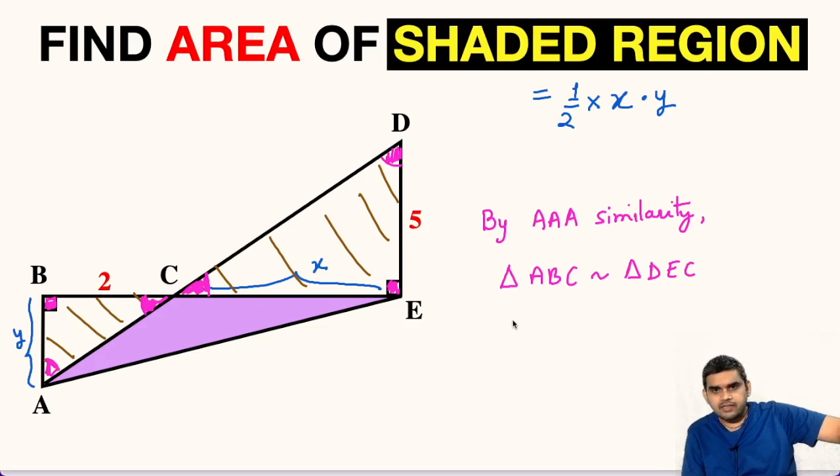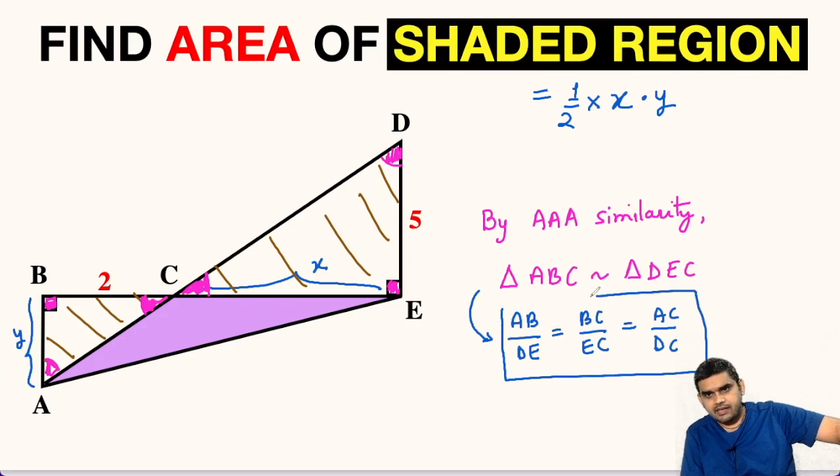From here, we can write that AB upon DE equals BC upon EC equals AC upon DC. In similar triangles, the corresponding sides are proportional. So by that property, we can write this equality.